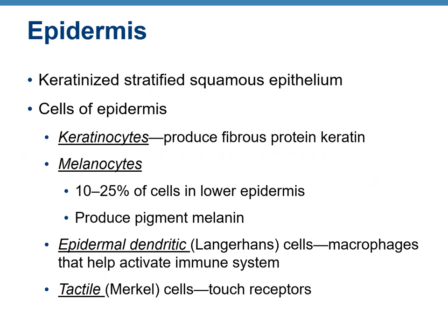The epidermis is made from epithelial tissue — it is keratinized stratified squamous epithelium. The major cells are keratinocytes, which produce the fibrous protein keratin. About 10–25% of the cells in the epidermis are melanocytes, located in the lower epidermis, which produce the pigment melanin. We also have dendritic cells, which are macrophages, and tactile cells or touch receptors.